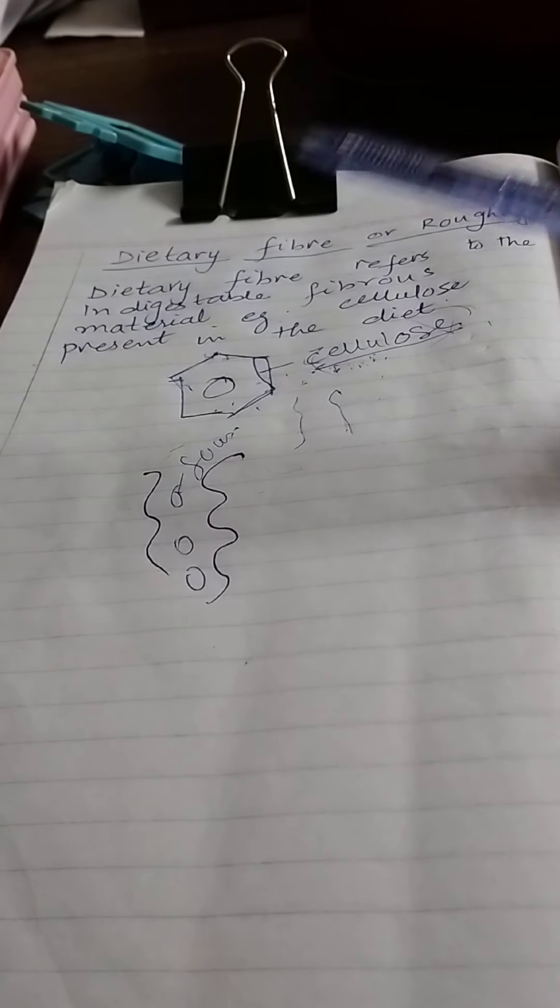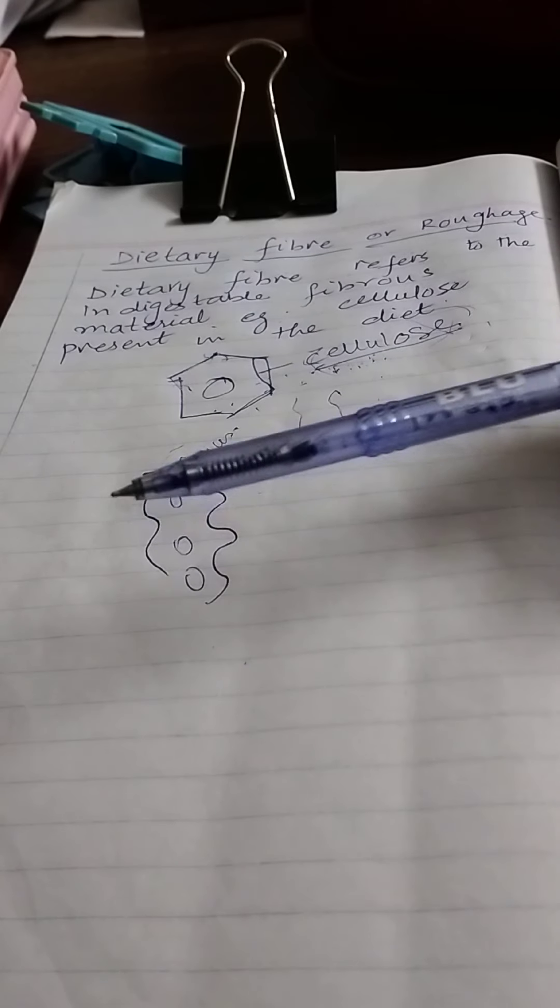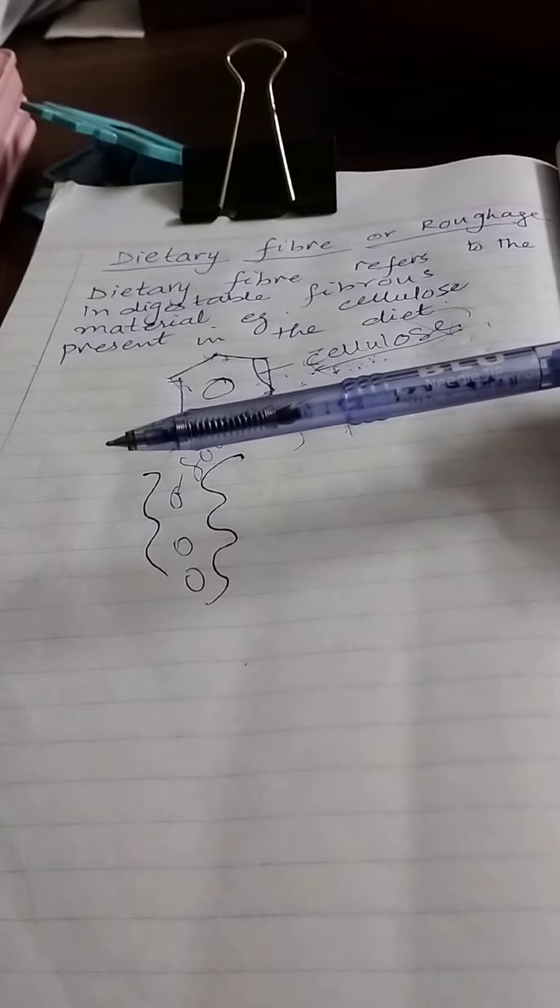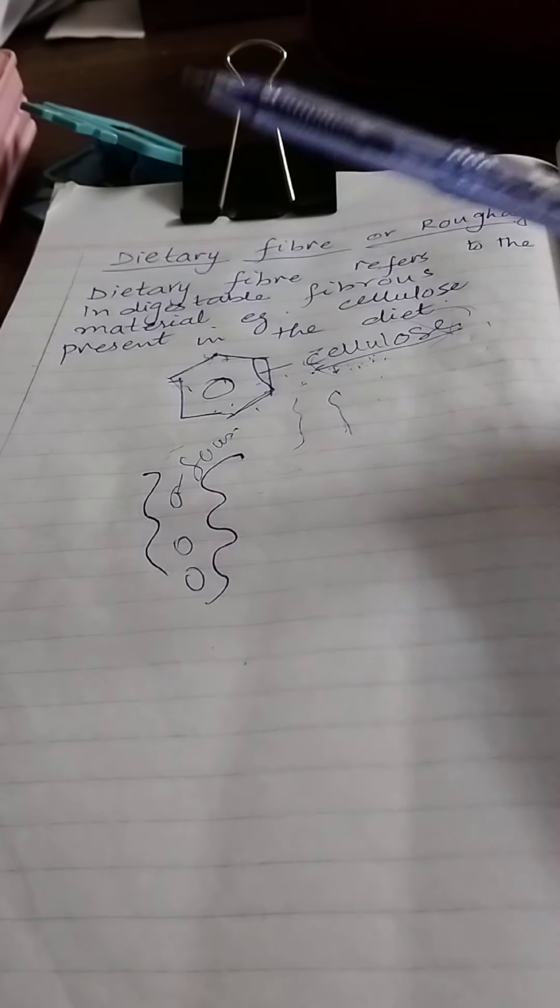It can be prevented by taking enough fiber and drinking sufficient water. Regular exercise also helps by promoting peristalsis. Good sources of fibers are fresh fruits and vegetables, cereals, and whole meal bread.